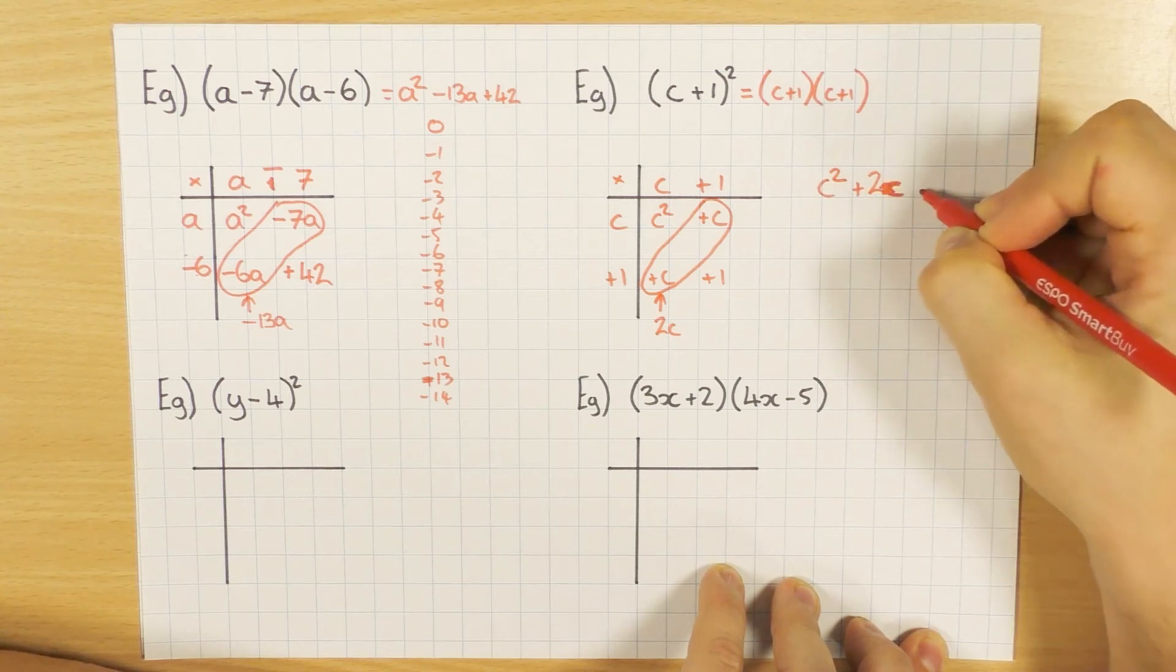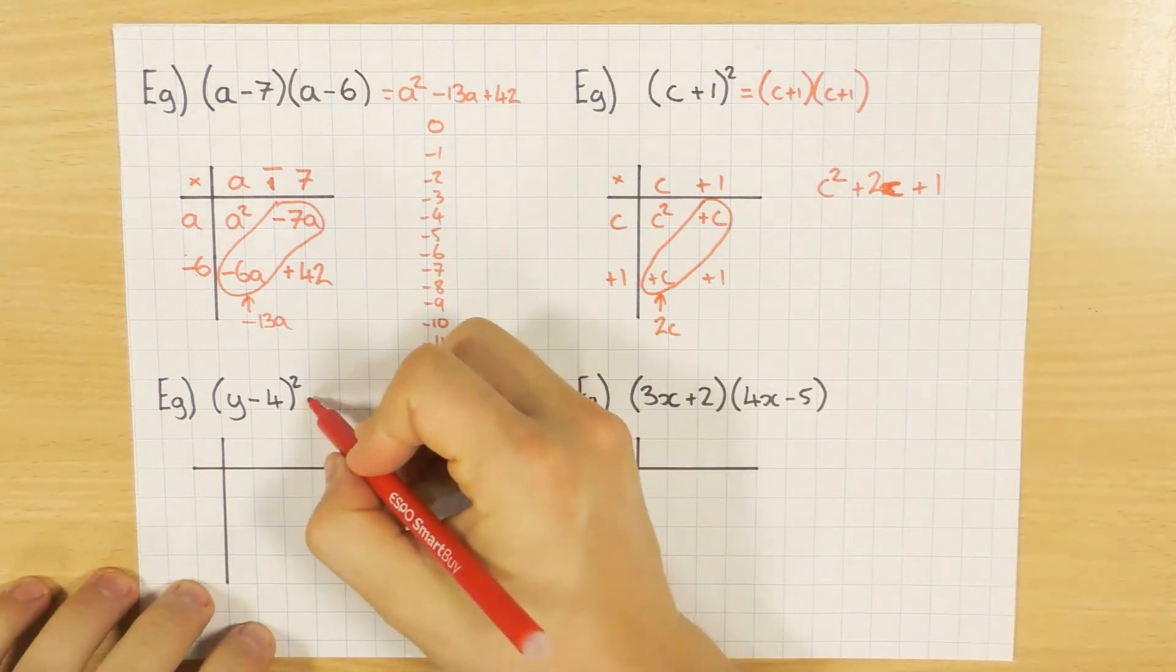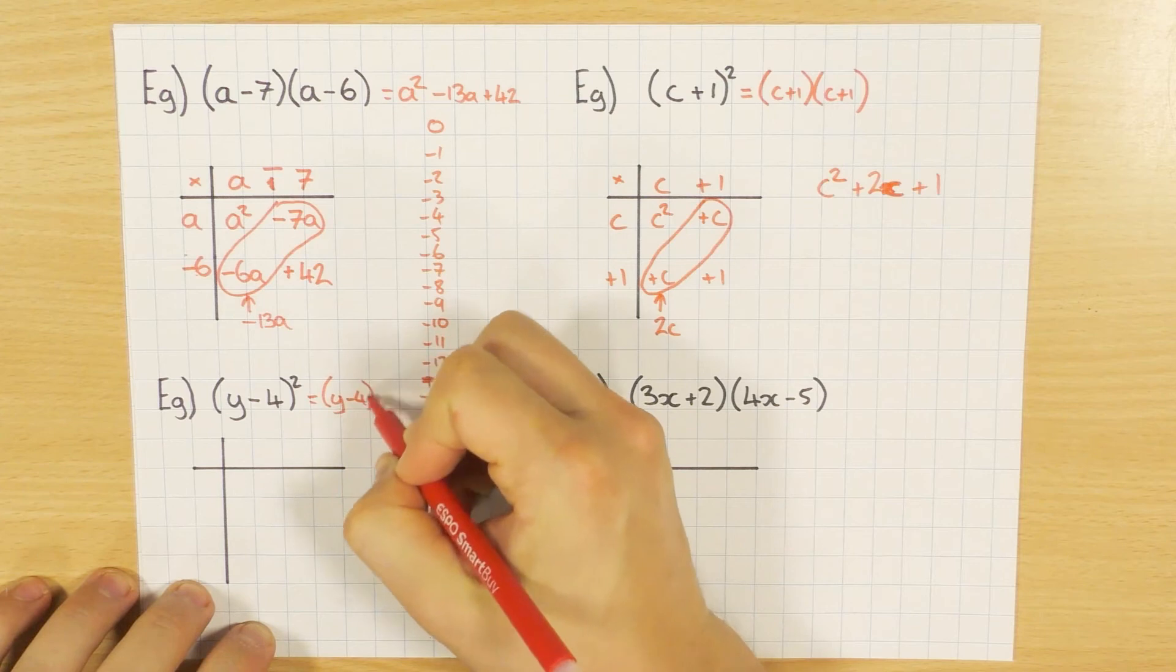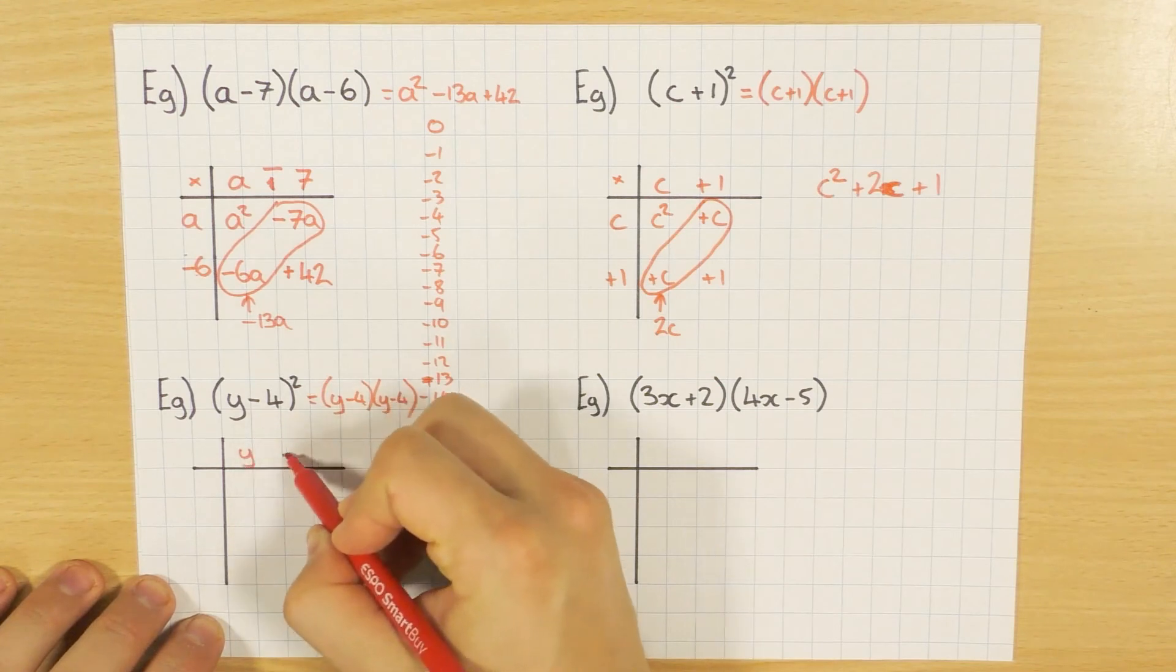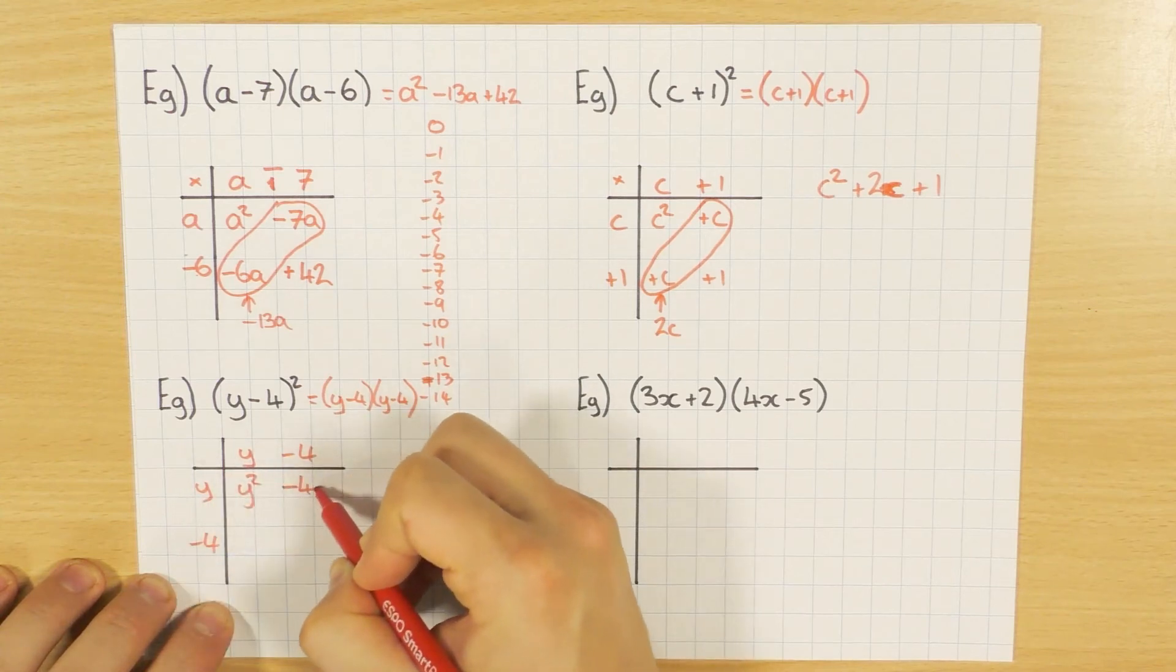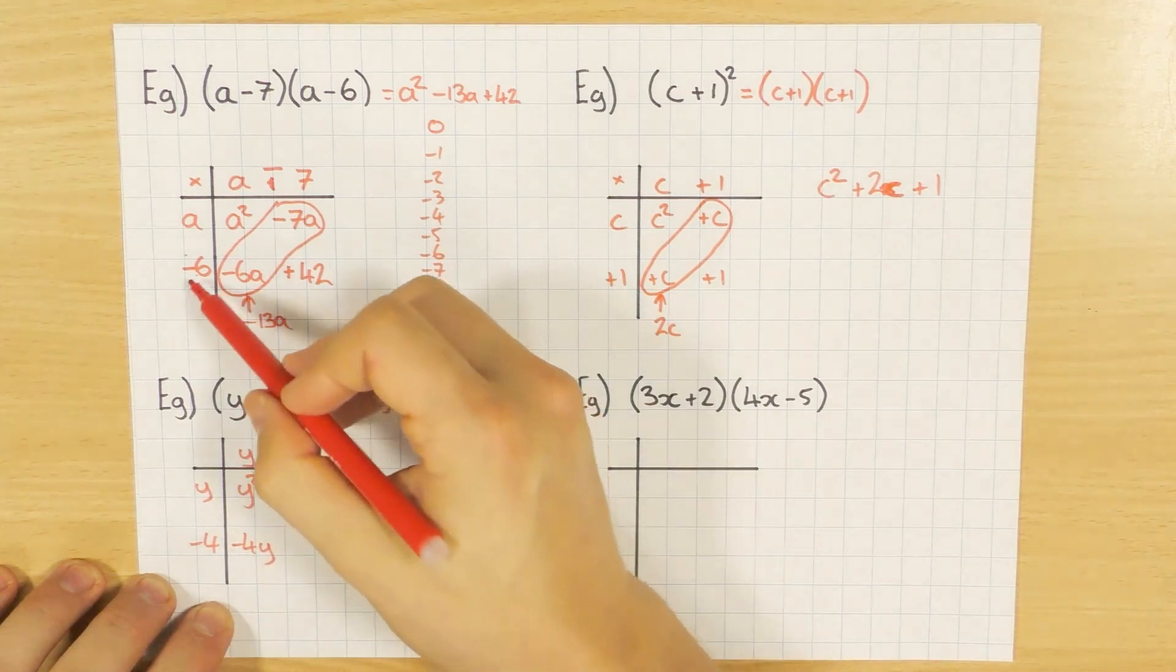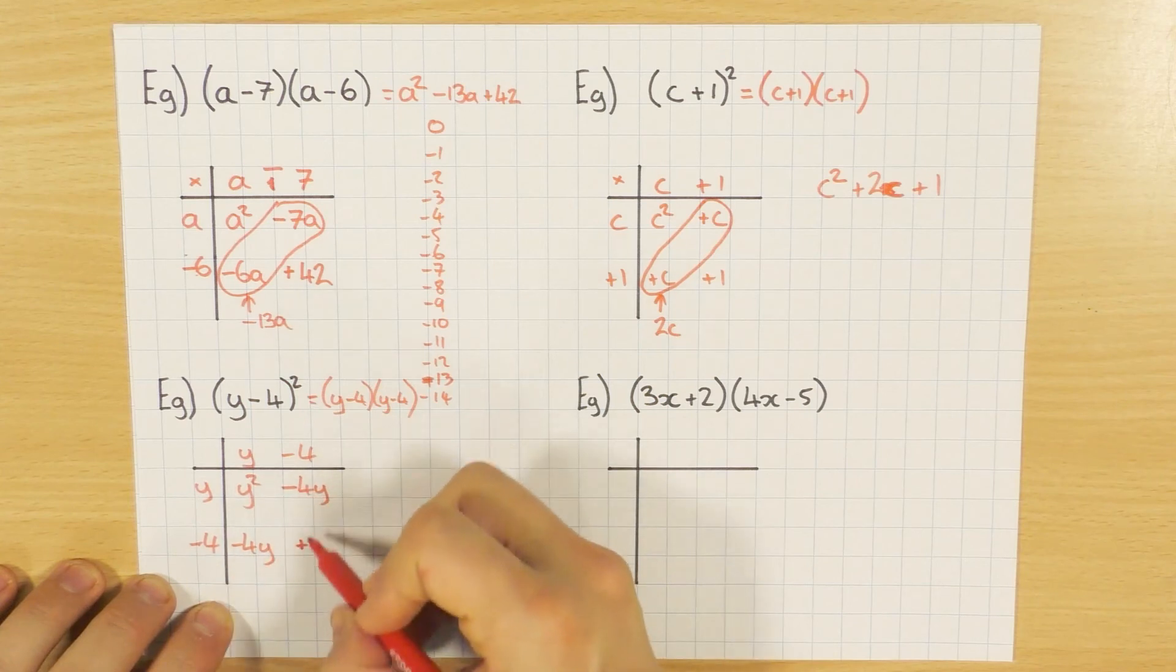Okay, same thing here. It's squared, so it means I'm timesing it by itself. So y minus 4, y minus 4. Stick it in your grid to expand it. Y times y is y squared, y times minus 4 is minus 4y. Same thing over here, minus 4y.